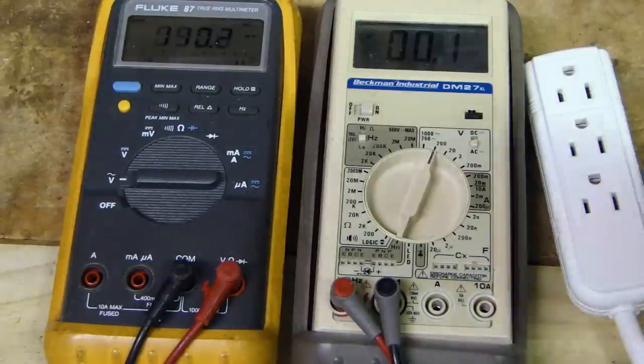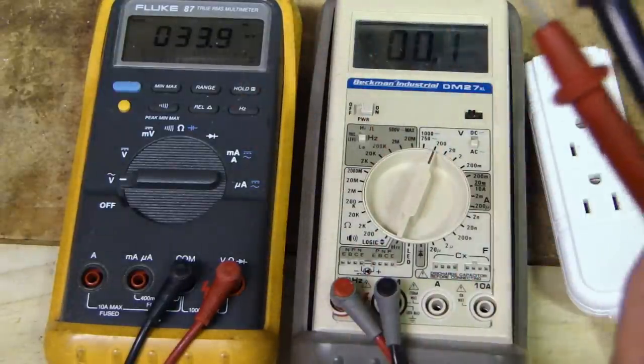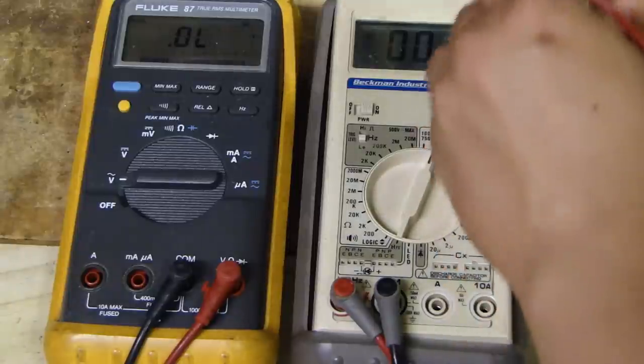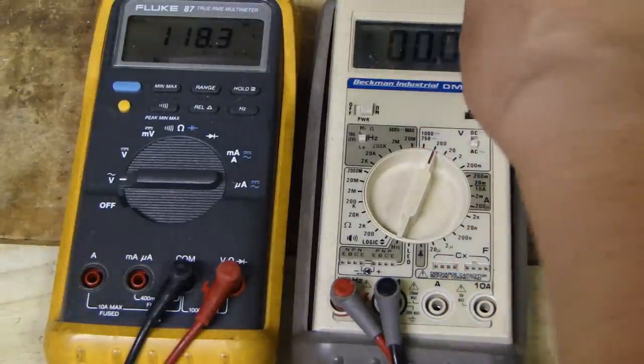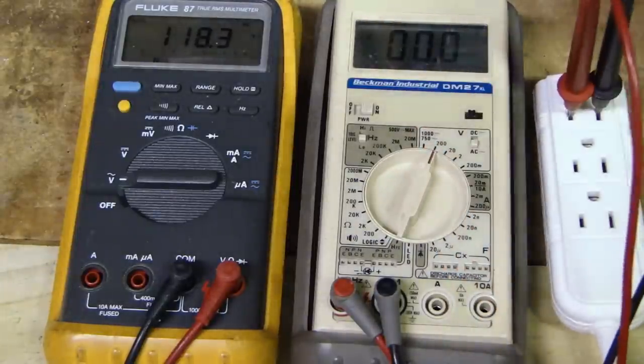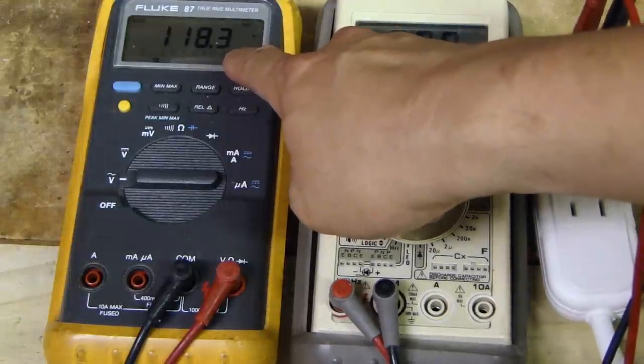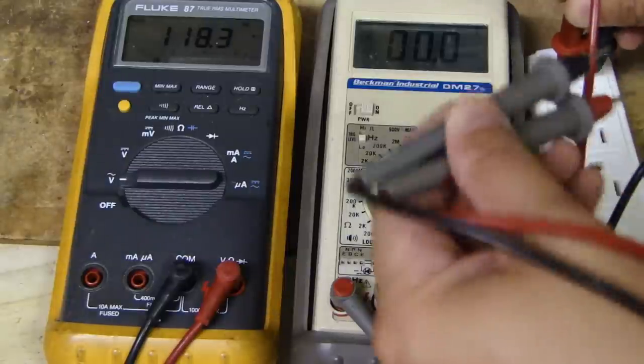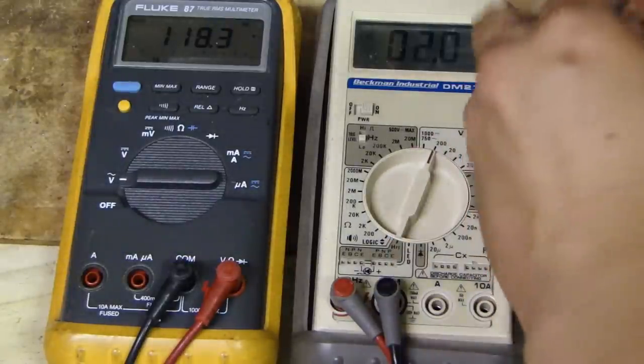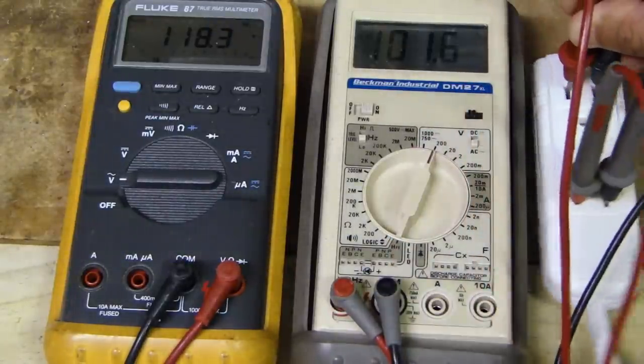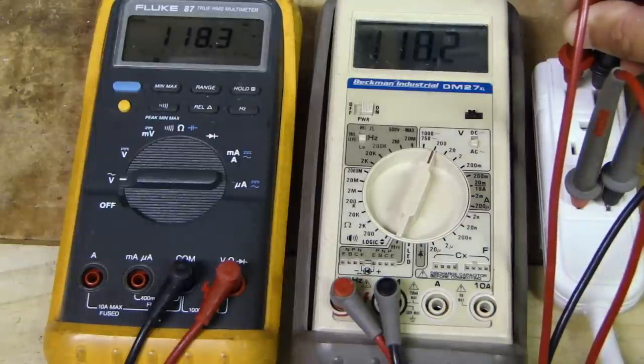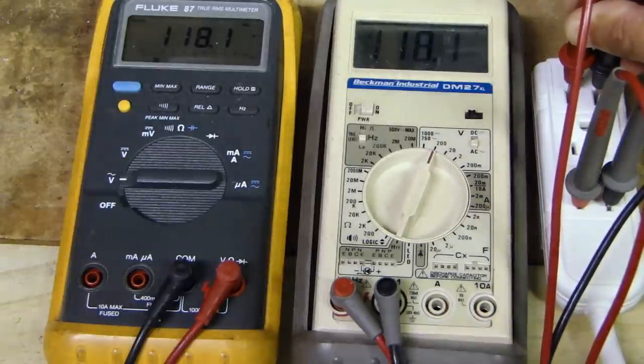I'm going to plug my probe into this outlet here. And you can see that is now measuring 118 volt AC. Right up here it says AC. And then measure this, over here. 118.1.